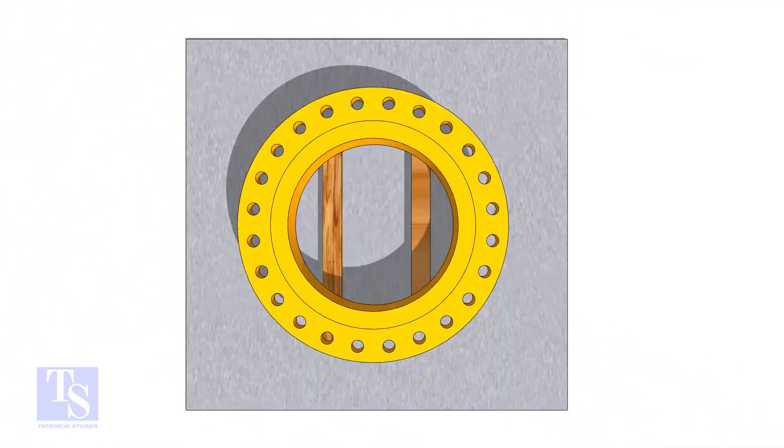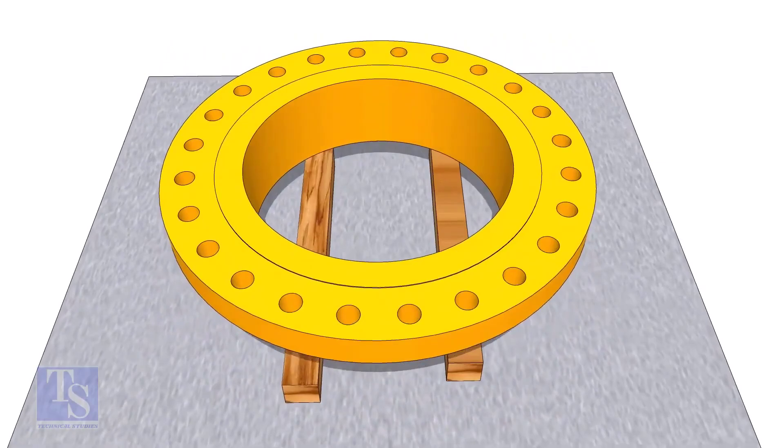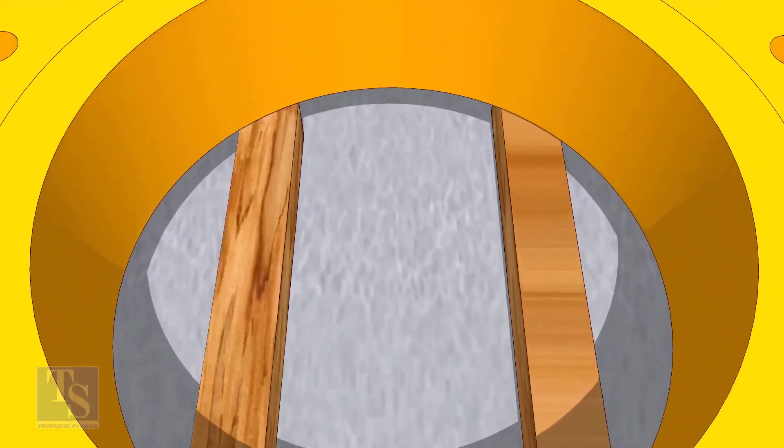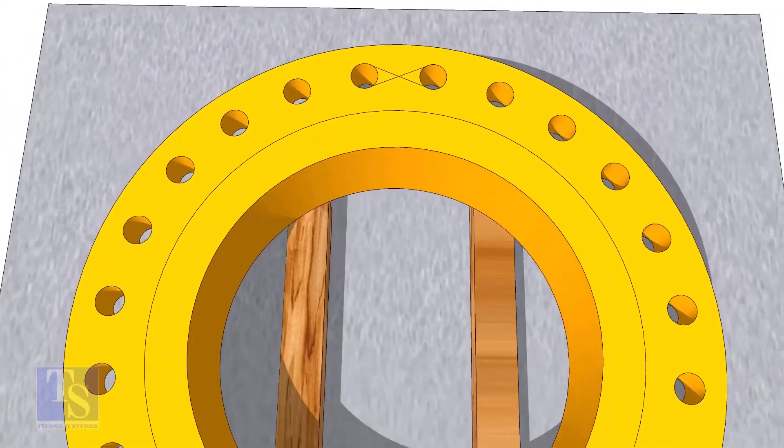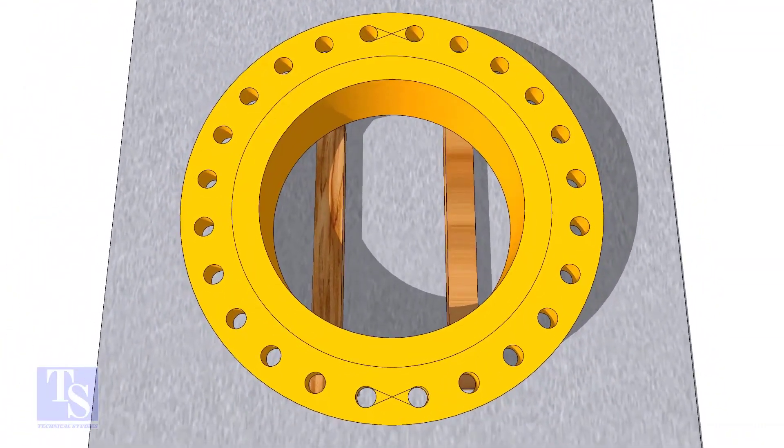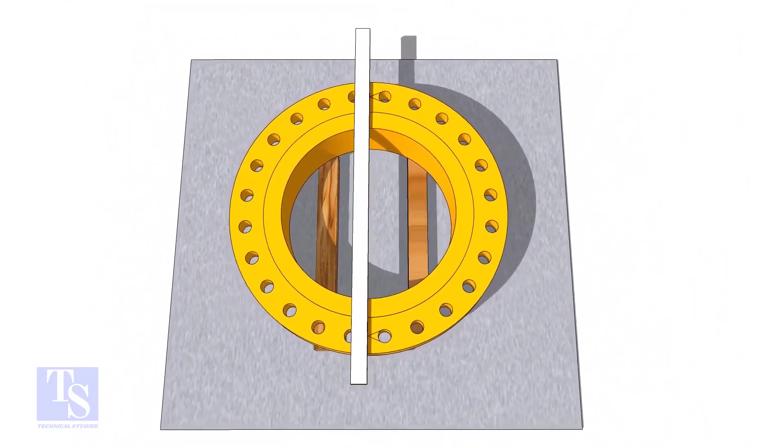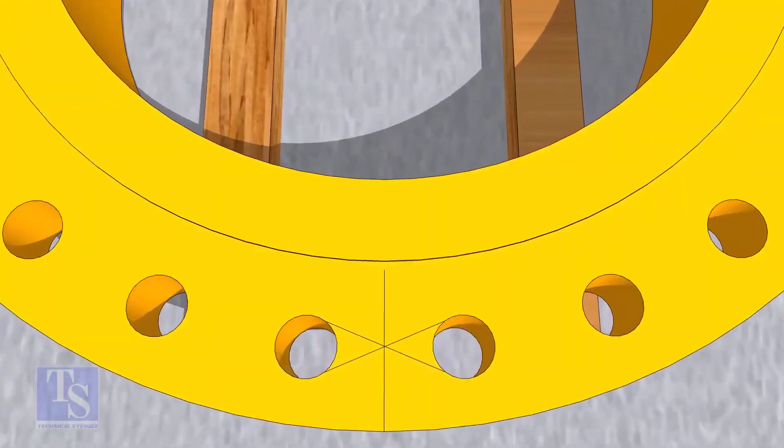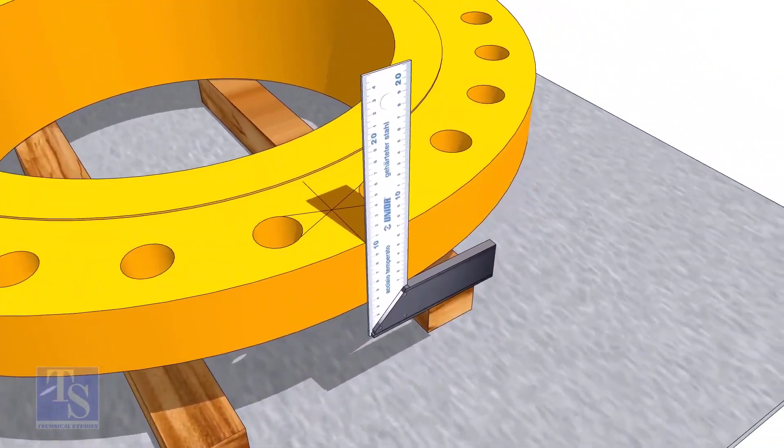In the second method, you need to mark the center line of the flange. Draw tangential lines on two adjacent holes on opposite sides. Draw a line as shown. Transfer the center line to the side of the flange.